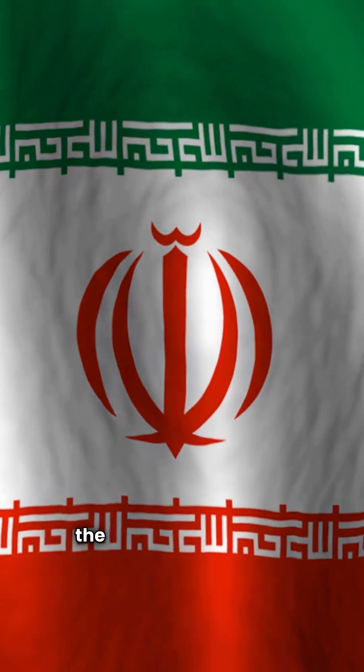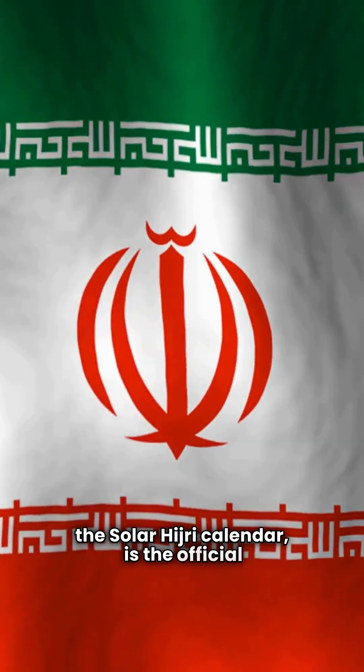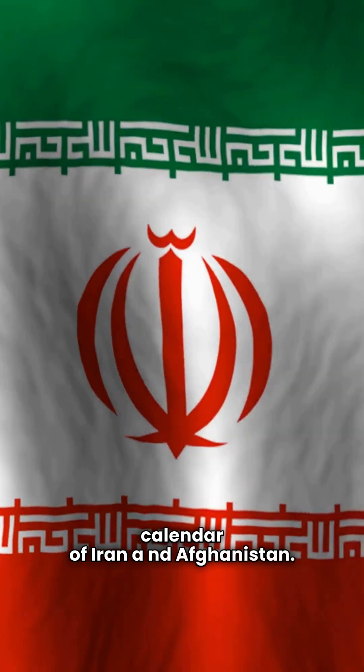The Persian calendar, also known as the Solar Hedri calendar, is the official calendar of Iran and Afghanistan.